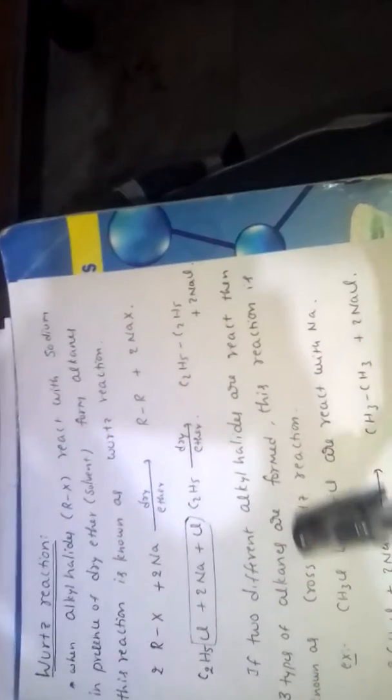If 2 different alkyl halides are present, then 3 types of alkanes are formed. This reaction is known as Cross Wurtz reaction.